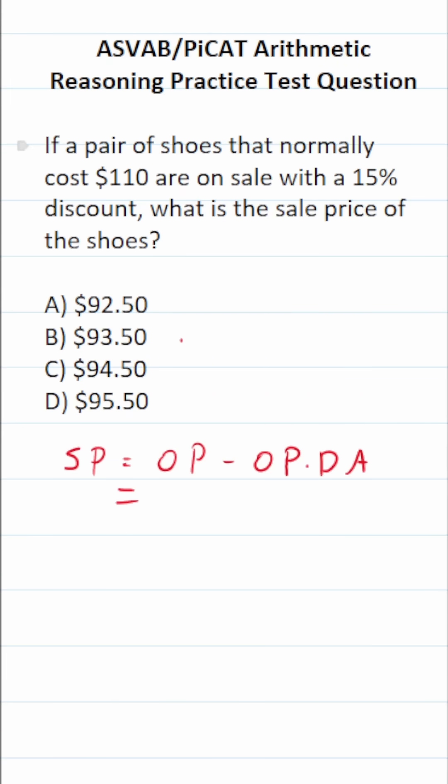What do these shoes cost before the discount? Well, they normally cost $110 according to the problem. So this is $110 minus $110 times the discount amount. What is the discount amount? According to the problem, it's 15%, which is the same thing as 0.15 as a decimal. So this right here is $110 times 0.15.